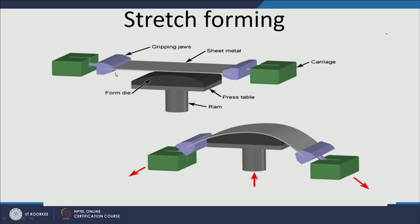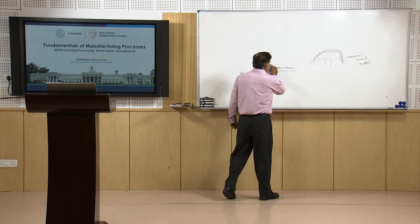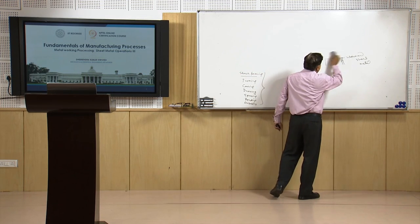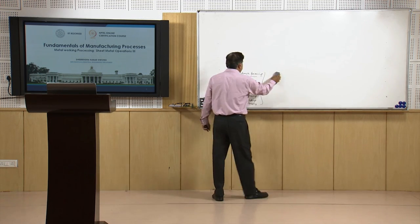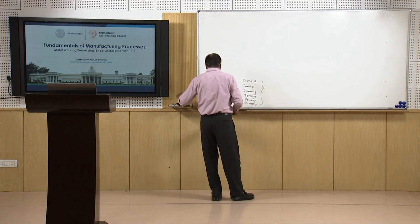The same thing is shown in these two diagrams, where these are the gripping ends of the sheet metal, this is the sheet metal, and this is the die which is pushed through it. Finally, when the sheet metal is stretched with the push force of the die, it takes the shape of the die. In this case tensile stresses are used to give shape to the sheet metal according to the shape of the die.